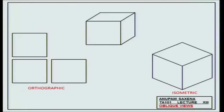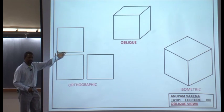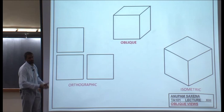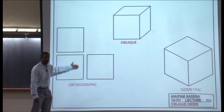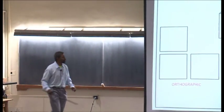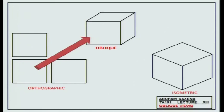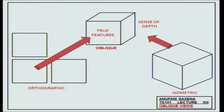Oblique view is a nice blend of orthographic views and isometric views. Faces which are parallel to the view plane get transferred directly in the oblique view, and you get to see the depth impression through the isometric-style receding lines. You get to see true features in a single view and also get the sense of depth. So oblique views are a nice blend of orthographic and isometric views.